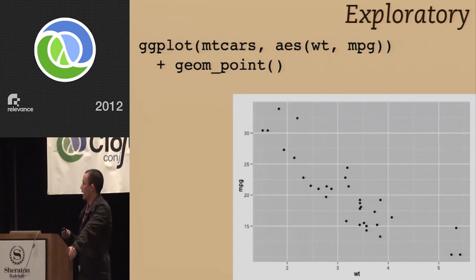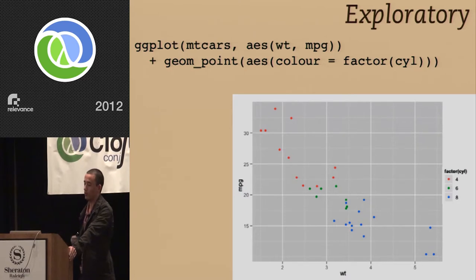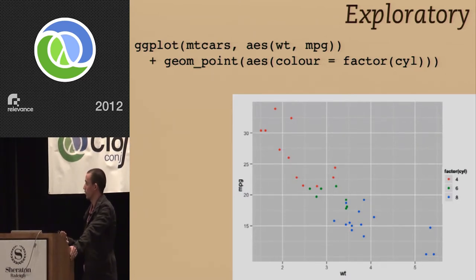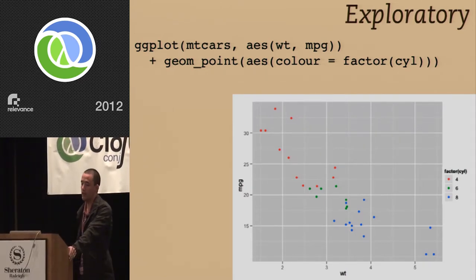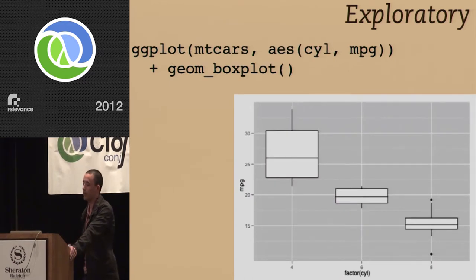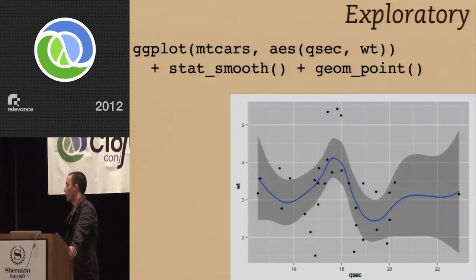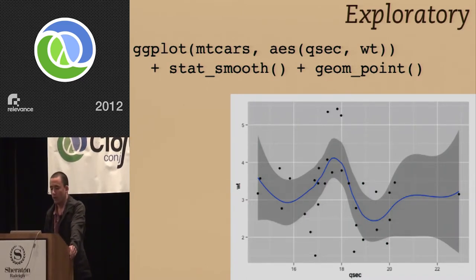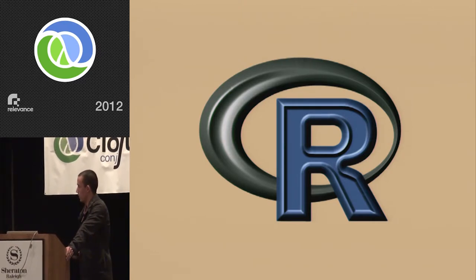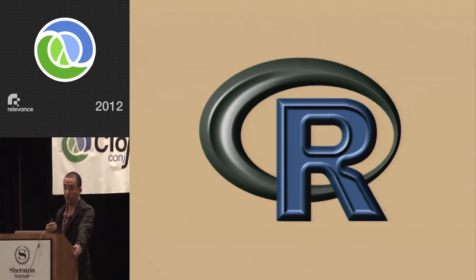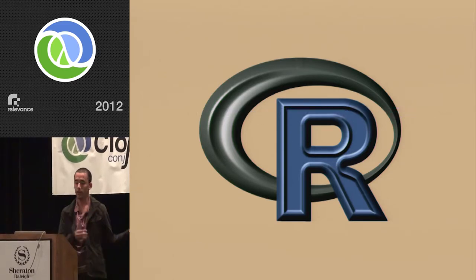What's cool about this is that it splits apart these different concerns and you can add additional aesthetic mappings very easily. So you can say: what if I want to color these points by the number of cylinders in the car? You can do that pretty easily, and the system draws you a legend on the side. And of course you have other kinds of geometries — box plots and so on. Since R is a statistical language, you can do things like curve fitting and moving averages as well.